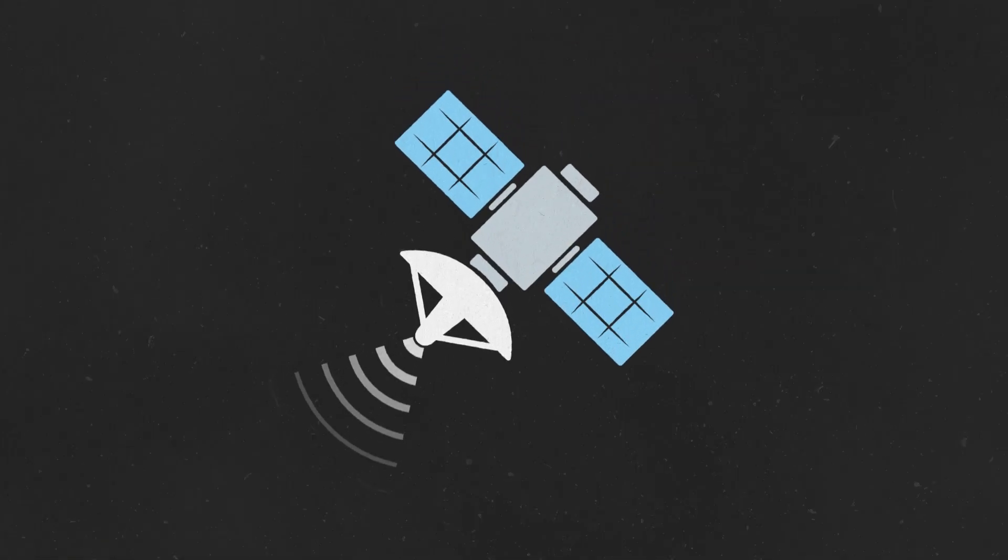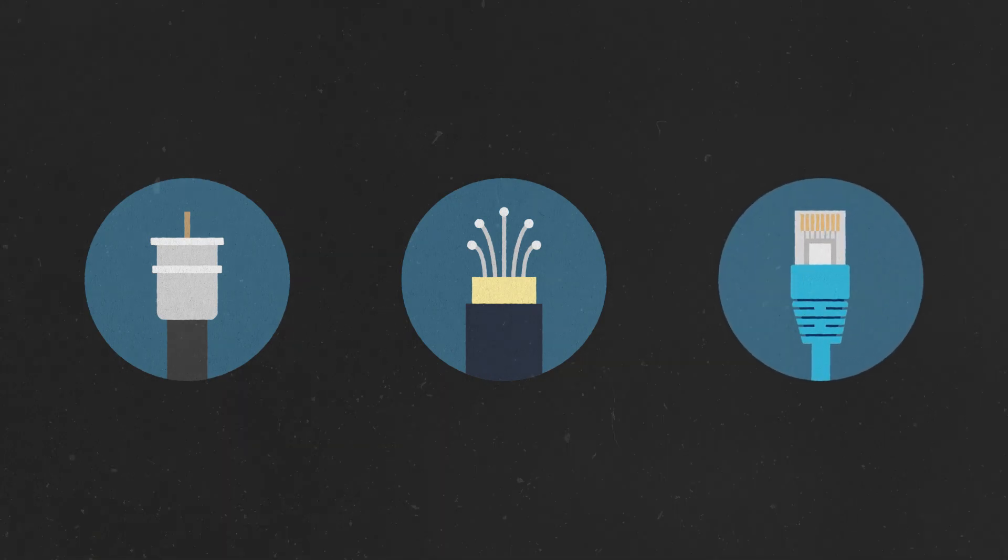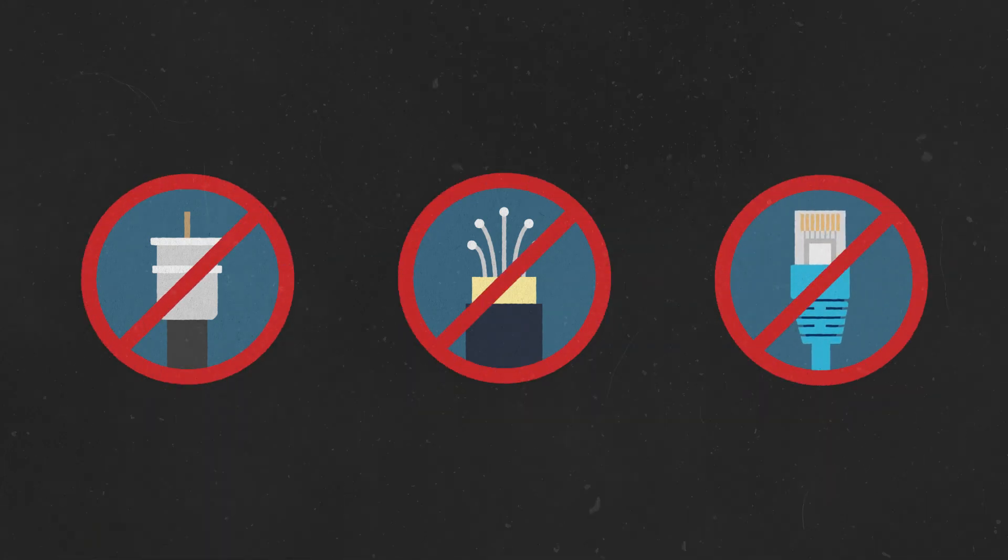Satellite internet is useful for places where traditional internet infrastructure like cable, fiber, or phone wiring isn't available, such as rural areas, small towns, or developing nations.